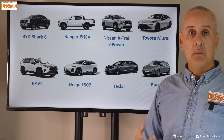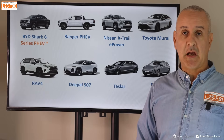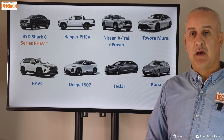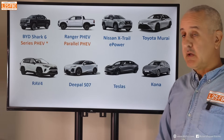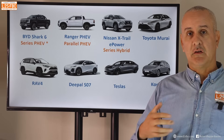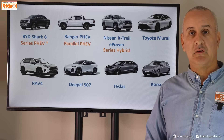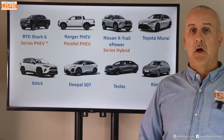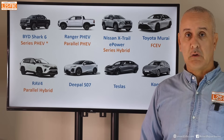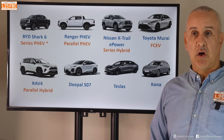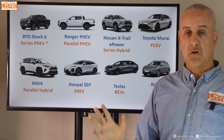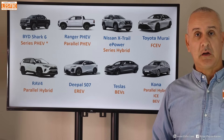Here's a summary of the eight example vehicles. The BYD Shark 6 is a series PHEV — with an asterisk, because in some circumstances the front wheels can be directly driven by the petrol engine. The Ford Ranger PHEV is a parallel PHEV. The Nissan X-Trail e-Power and Qashqai are series hybrids — their petrol engines never drive the wheels, only generate electricity, which owners often find surprisingly cool. The Toyota Mirai is a fuel cell electric vehicle. The RAV4 is a parallel hybrid — only available as a hybrid. The Deepal S07 is an extended range electric vehicle. All Teslas are pure battery electric vehicles.